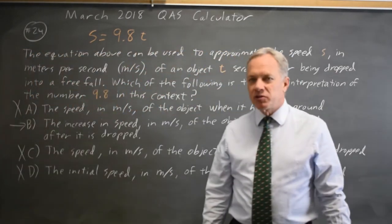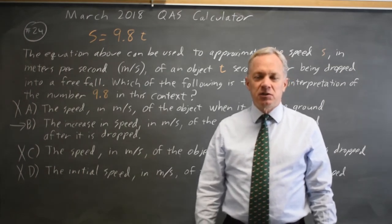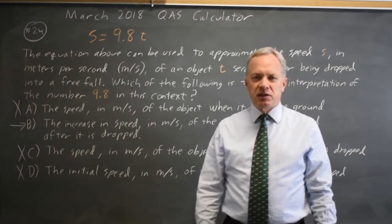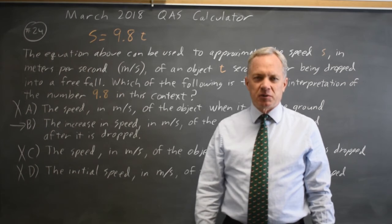The correct answer for the interpretation of the slope in the context of the problem is choice B. It's the amount that the speed increases for each second that the object falls.